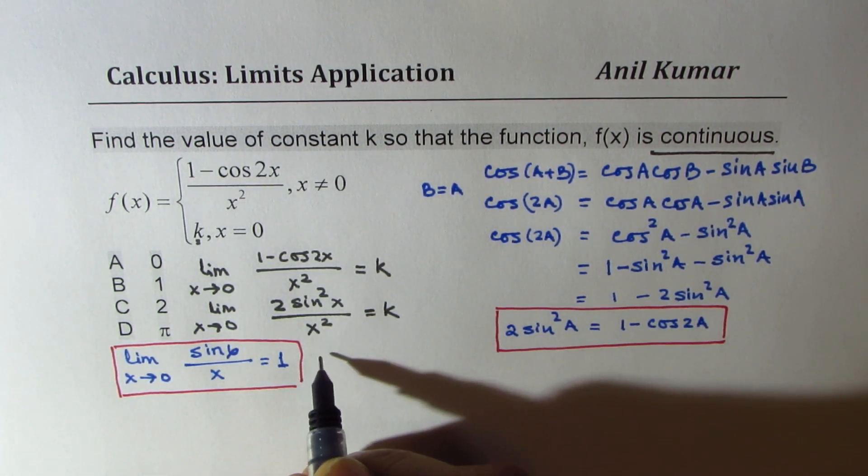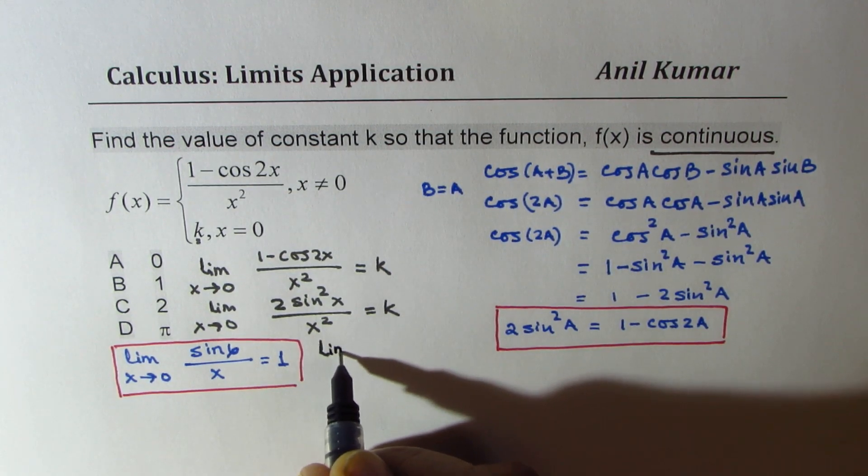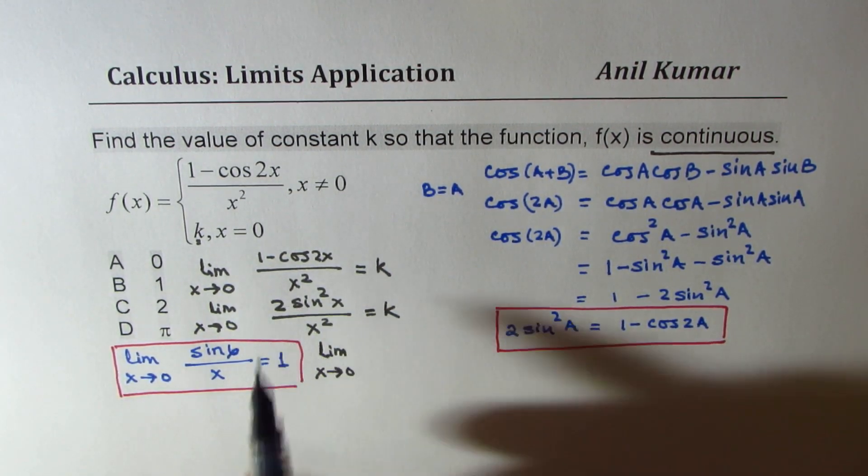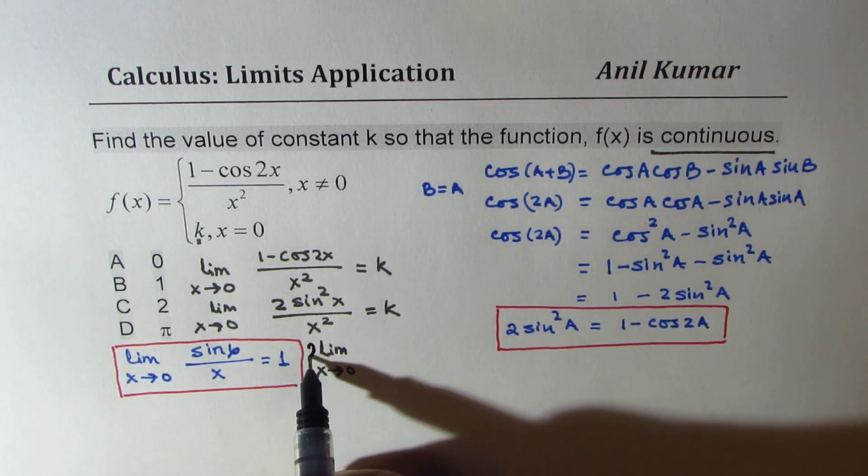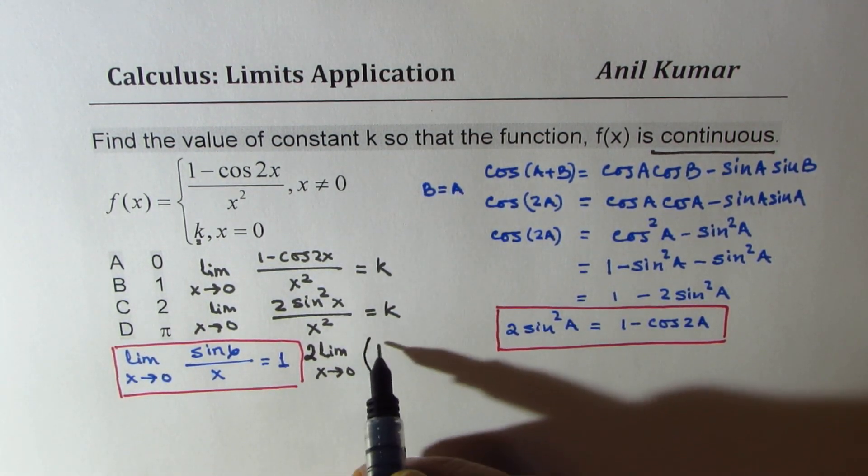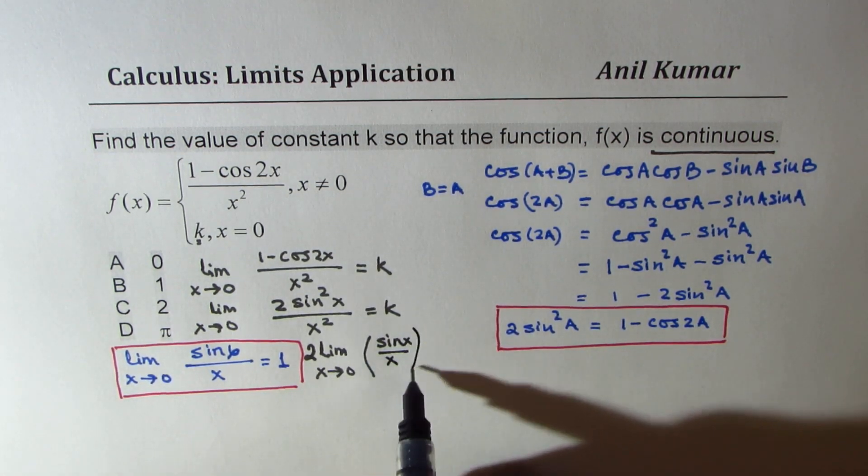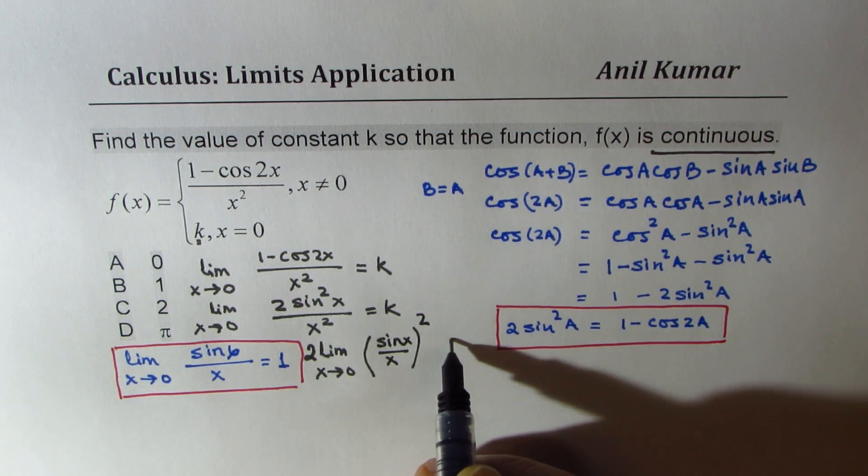So we'll rearrange. So we could write this as limit x approaches 0. So I could take away 2 as a constant, so we could take away 2 outside. So I've taken that outside, and inside I'm writing this as sin x over x whole squared. That should be equal to k.